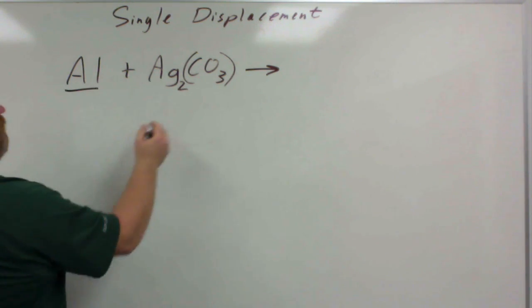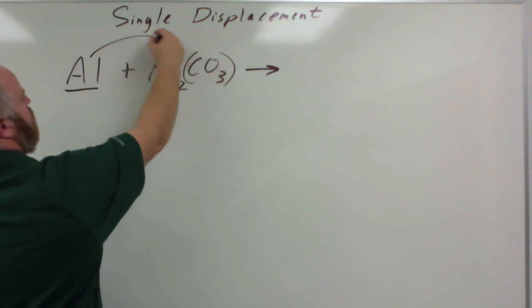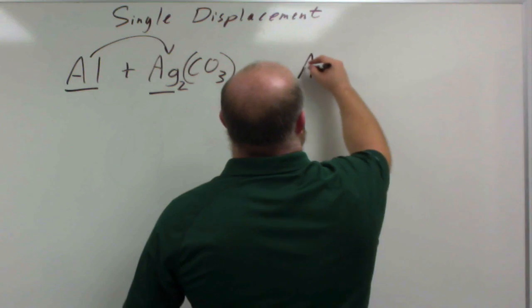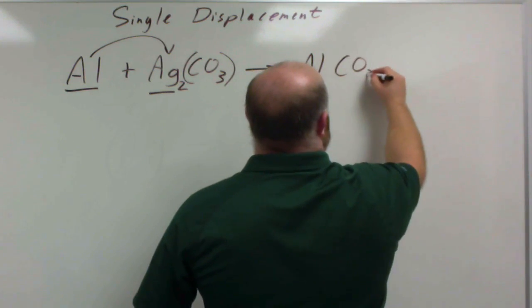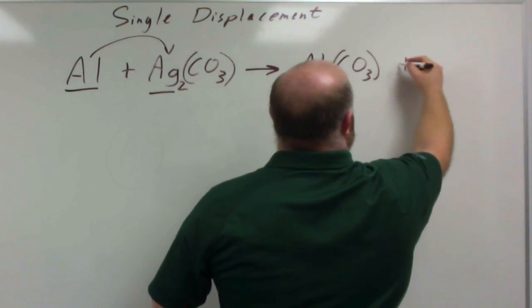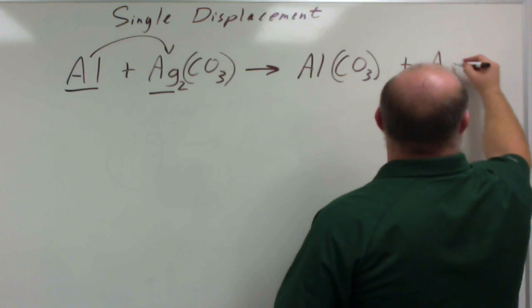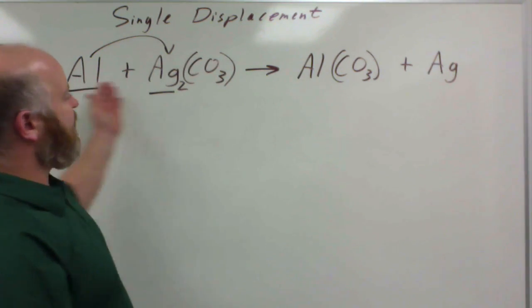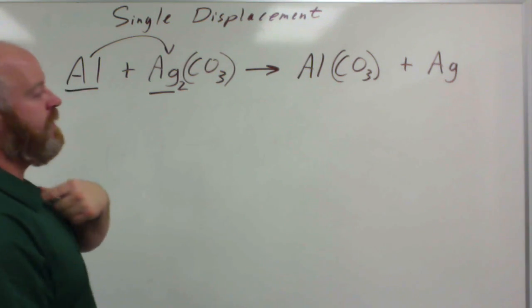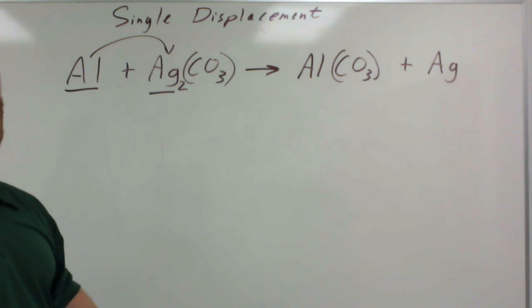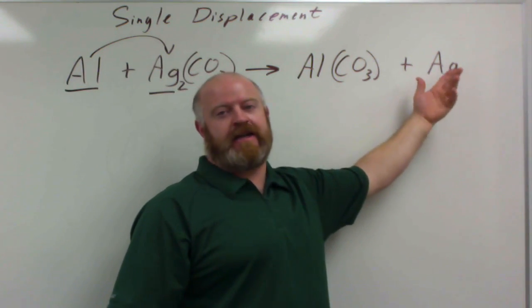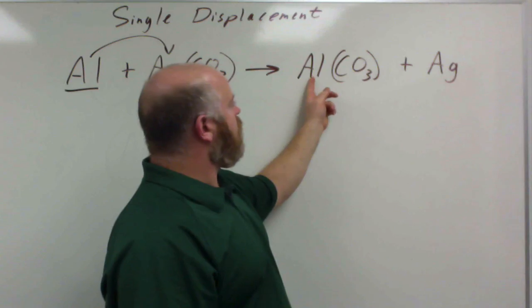Aluminum is a metal, so it's going to replace the metal. So aluminum is going to come in, it's going to kick the silver out, so then the aluminum will bond with the carbonate, and the silver gets put over all by itself. Now we're not done because we need to make sure the equation is balanced and we need to make sure all our subscripts are correct. So silver is a metal, it's all by itself, it's not a diatomic, so this one's done.